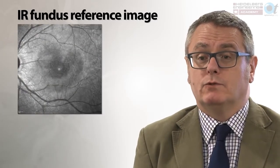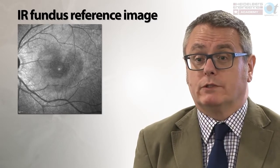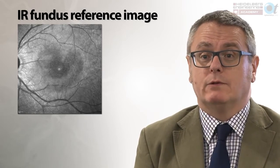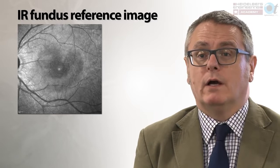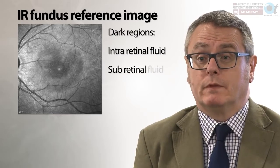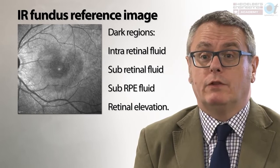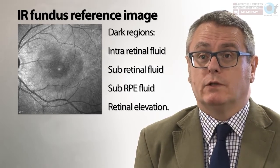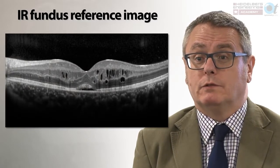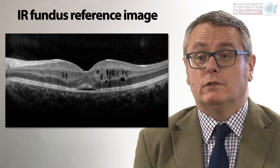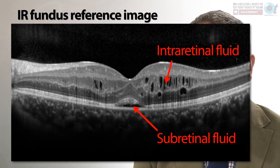Here we have an example of an elderly gentleman who recently underwent cataract surgery with a good visual outcome. Approximately six weeks later we can see an area that is heart-shaped but darker within the fundus reference image, showing an area of absorption of infrared light. The most likely cause is fluid within the retina, underneath the retina, or underneath the RPE. Changes in infrared reflectance can also be caused by pigmentary change associated with the retinal pigment epithelium or disruption to the photoreceptor layers. The OCT confirms evidence of intraretinal fluid and subretinal fluid on the cross-section, clearly manifest on the high magnification image.